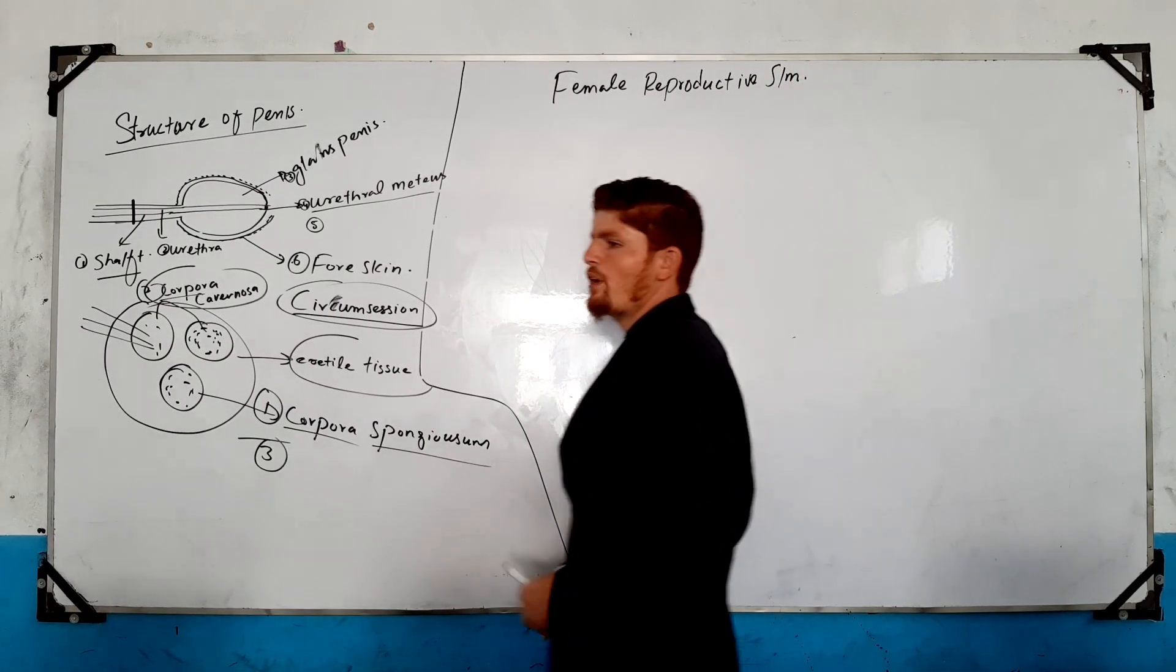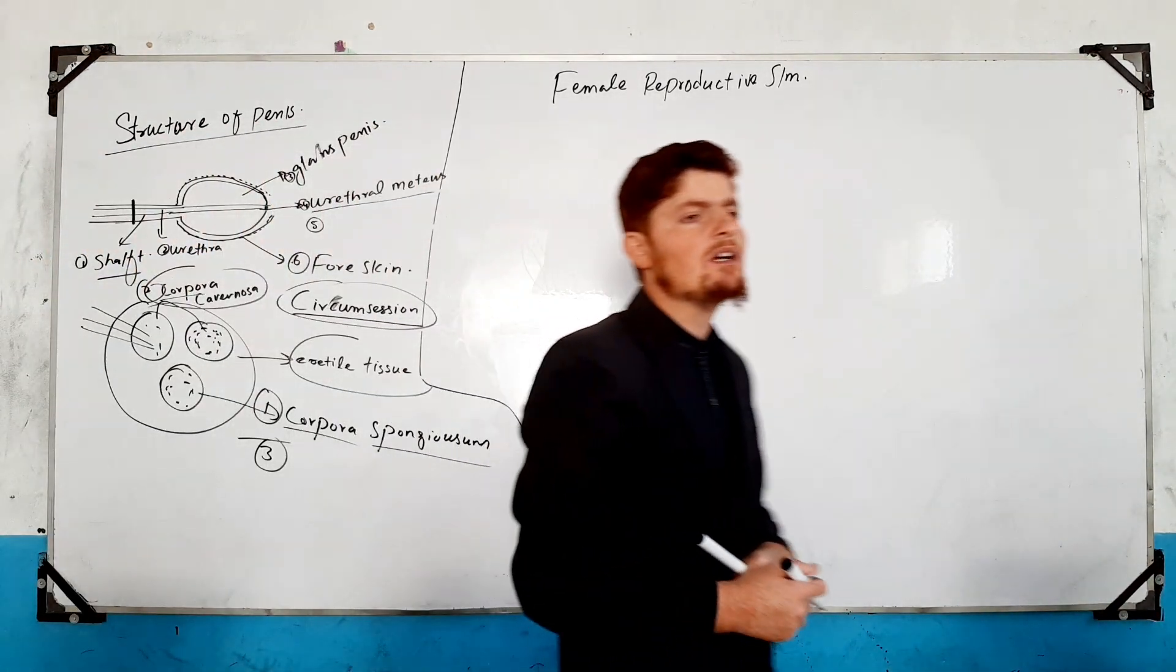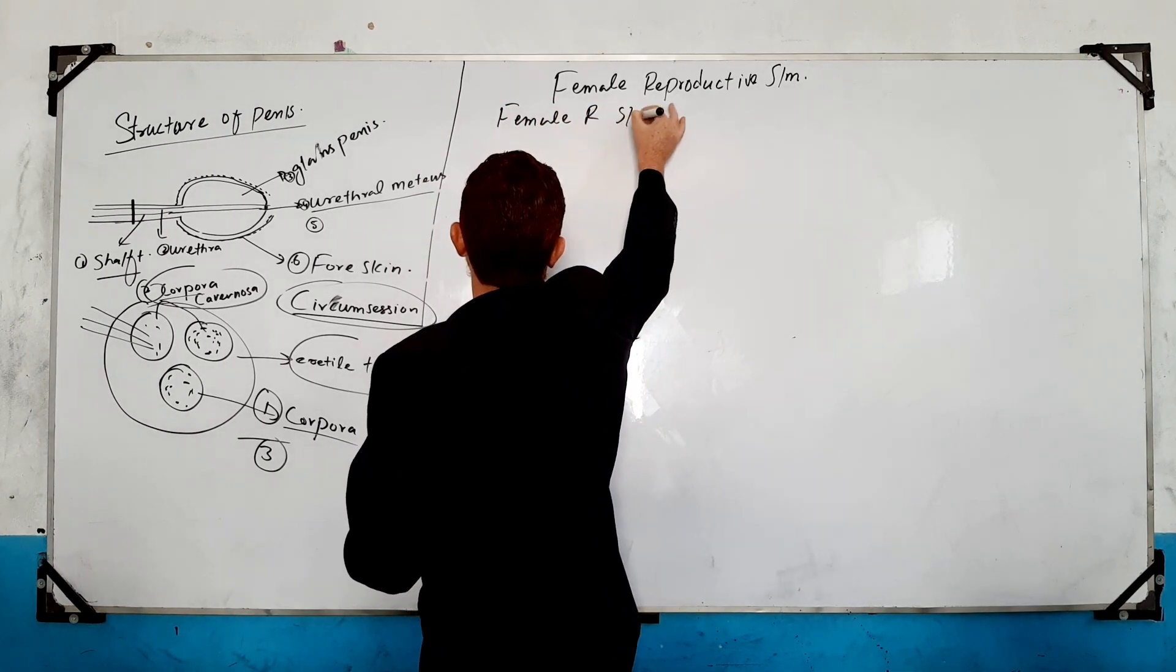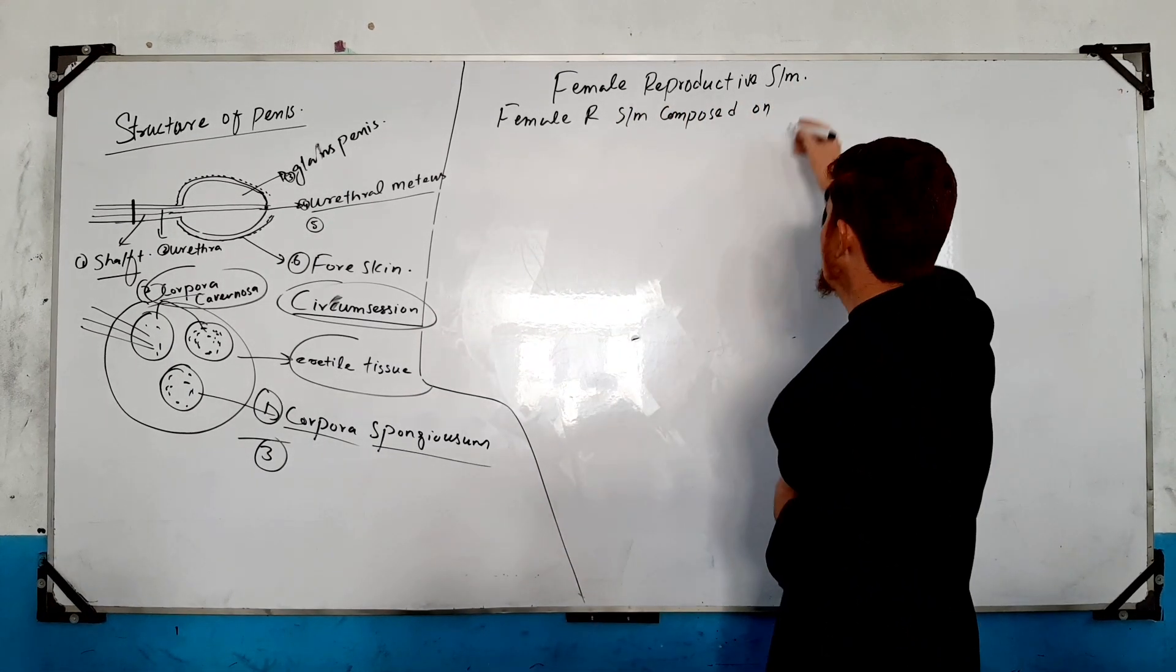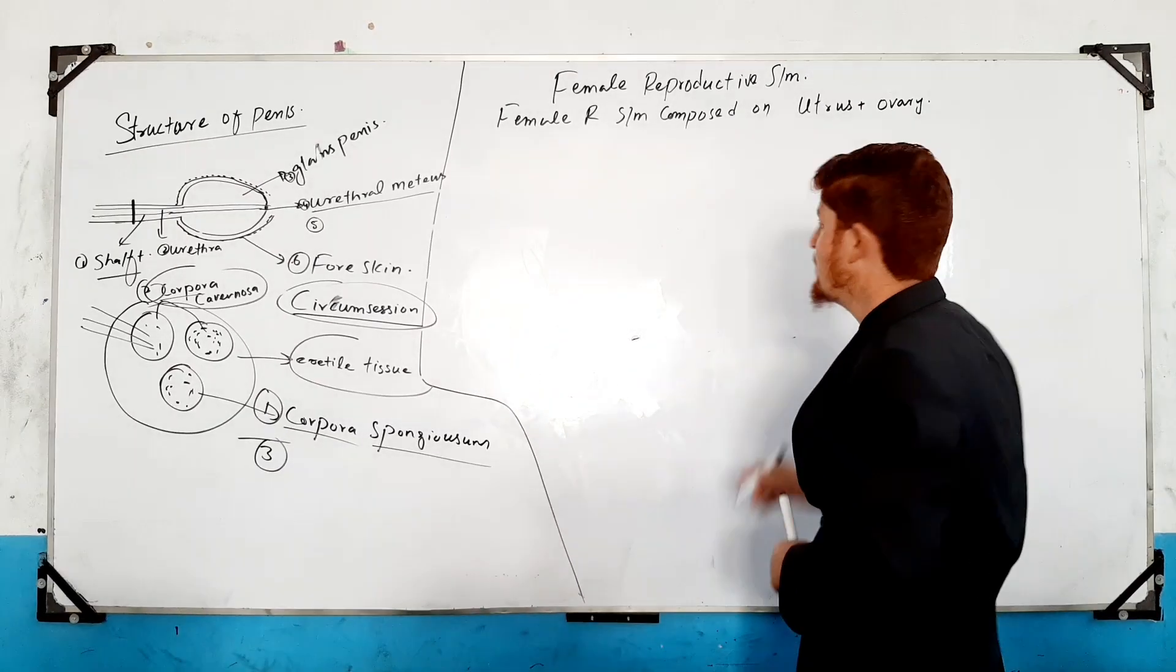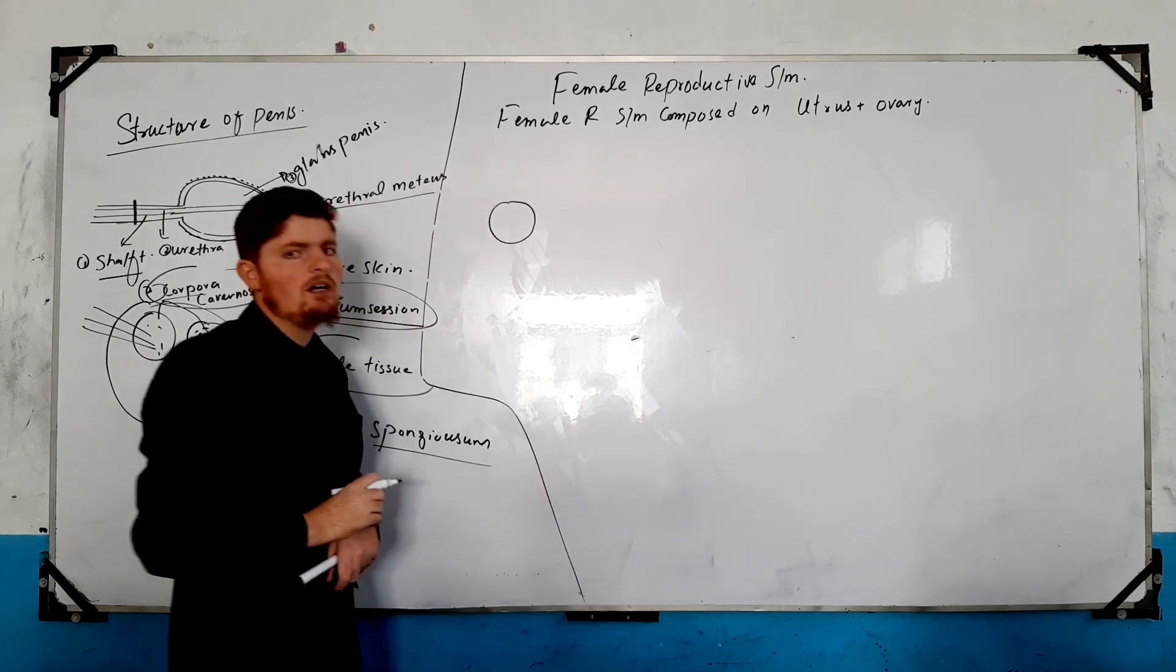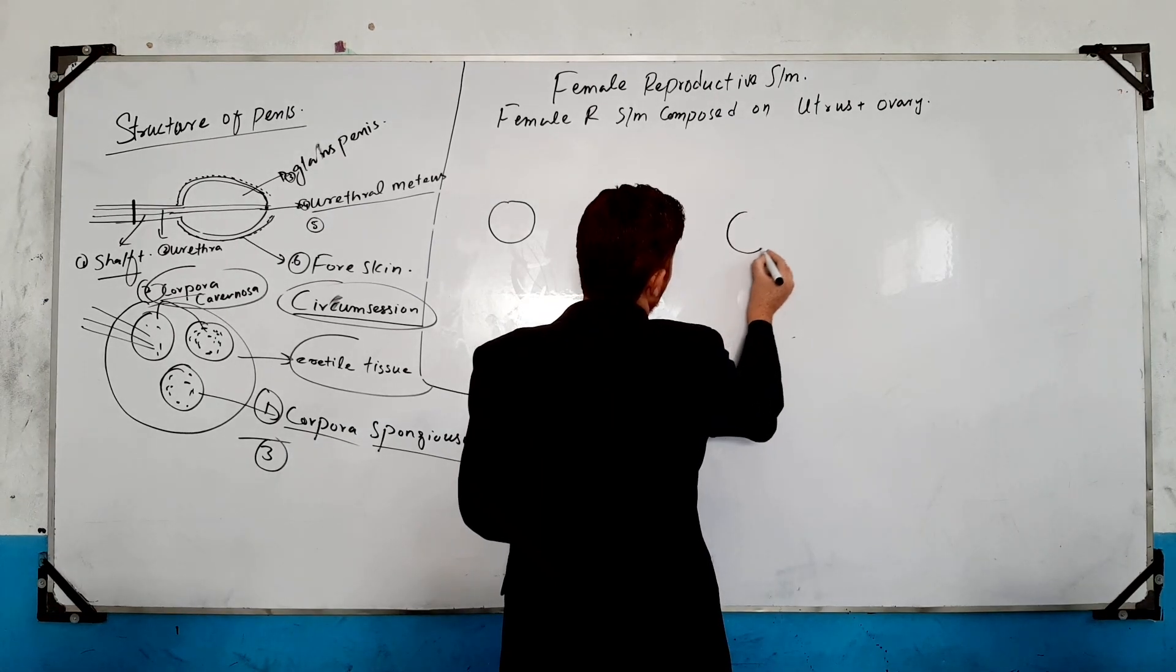Female reproductive system. The uterus is here. The first one is the ovary. The female reproductive system is composed of the uterus, the ovaries. The ovaries. Ovarian and testis, right testis, left testis. The ovarian.